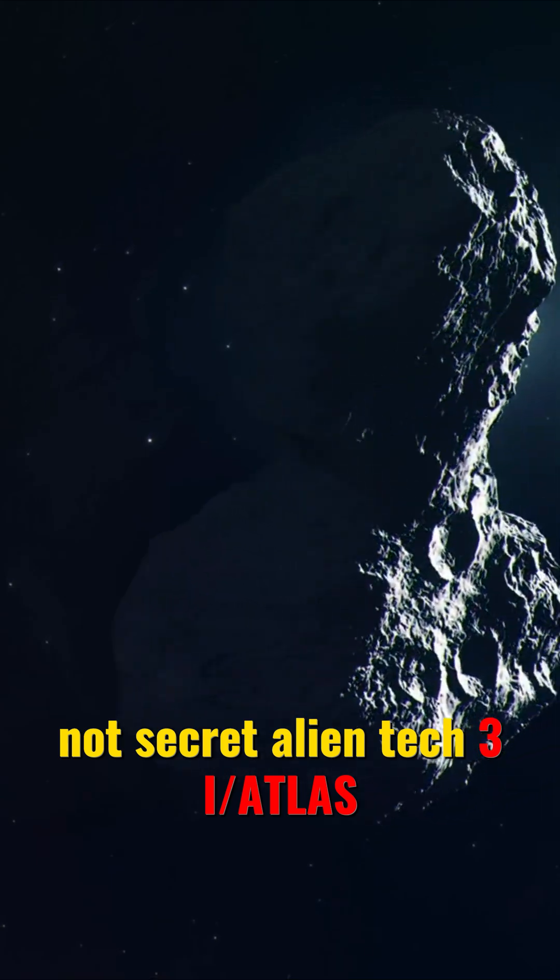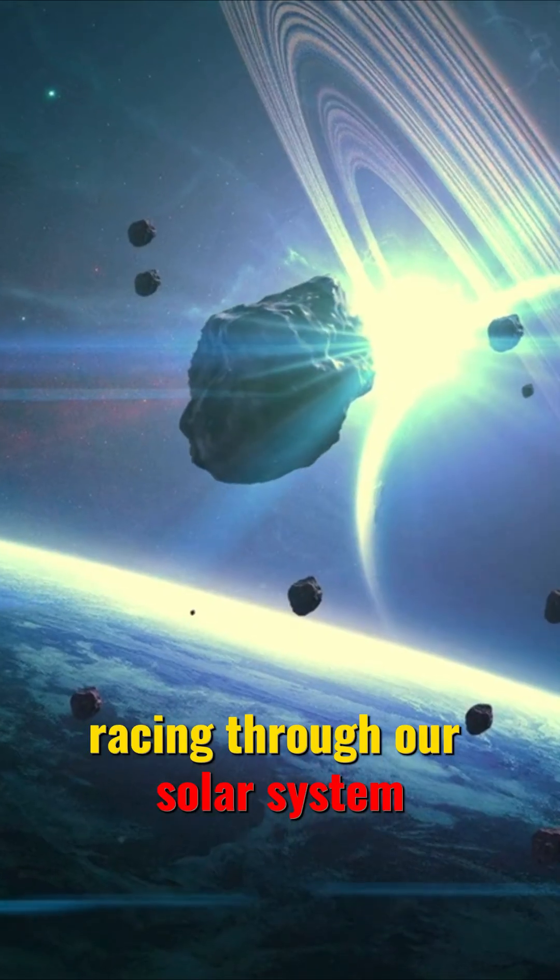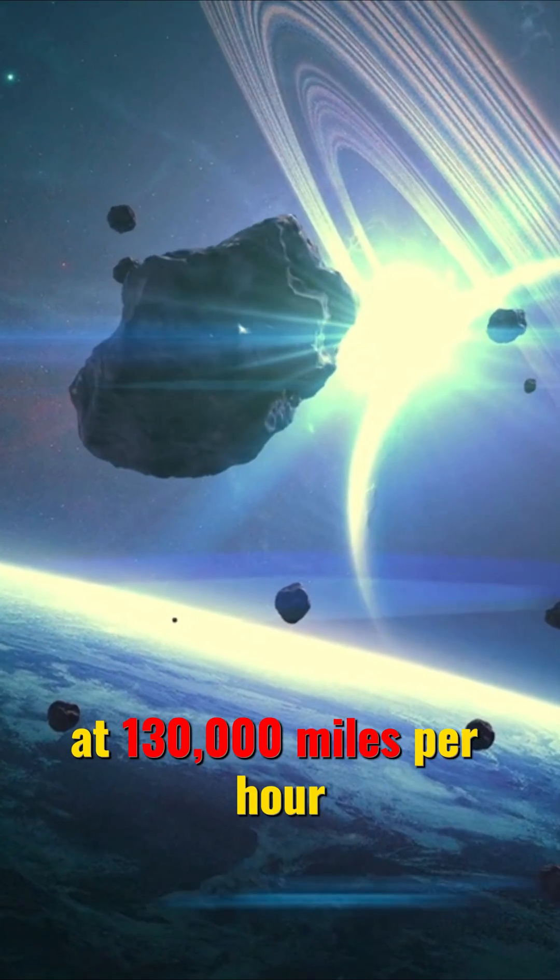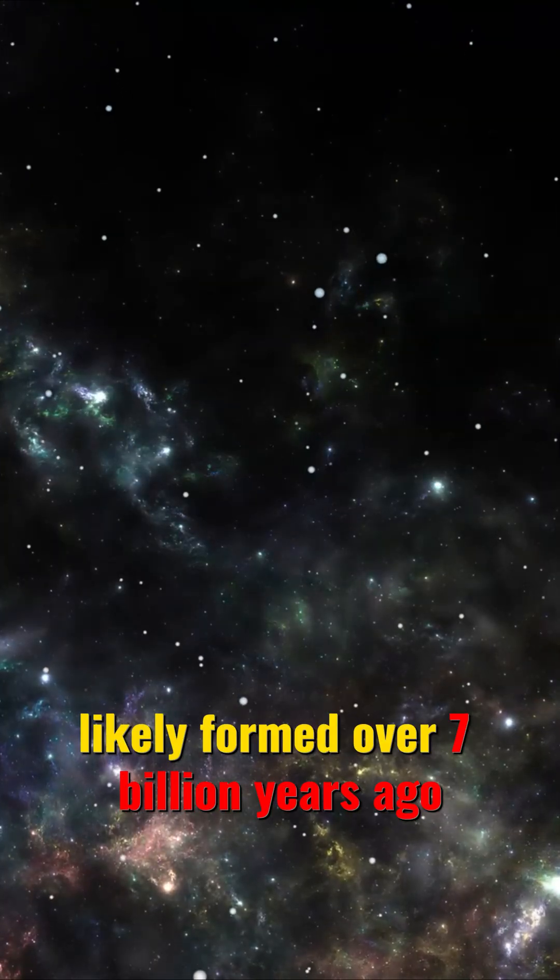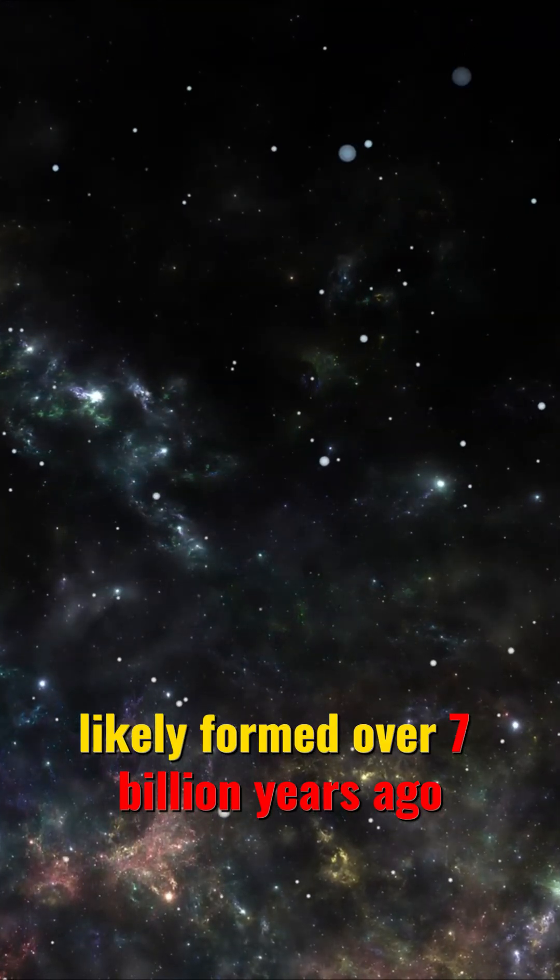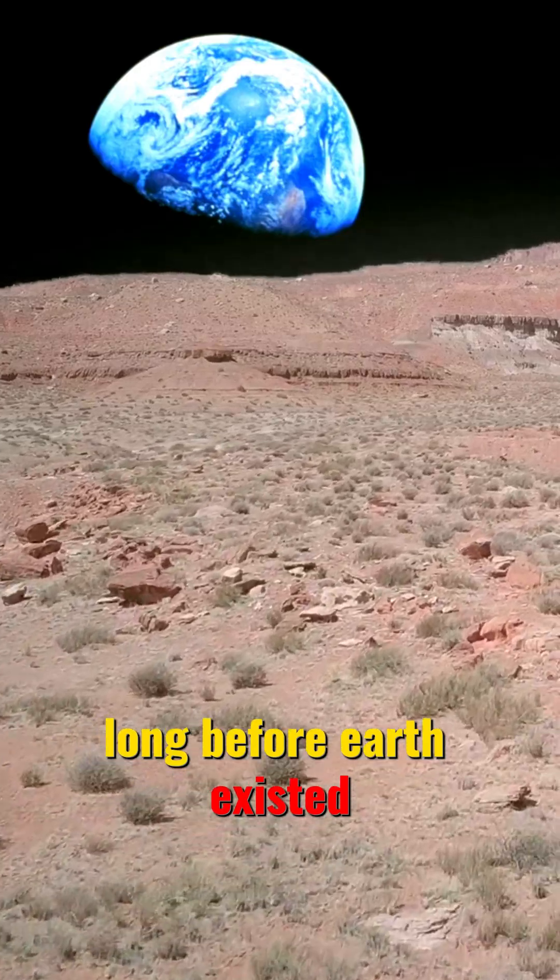3I-ATLAS racing through our solar system at 130,000 miles per hour, likely formed over 7 billion years ago, long before Earth existed.